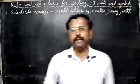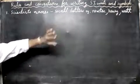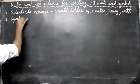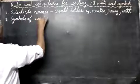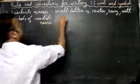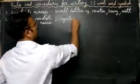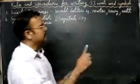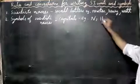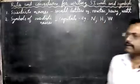The second rule: when you use the short form or symbol of a scientist's name, you write it in capital letters. For example, Newton is written as capital 'N', Henry as capital 'H', and Watt as capital 'W'.